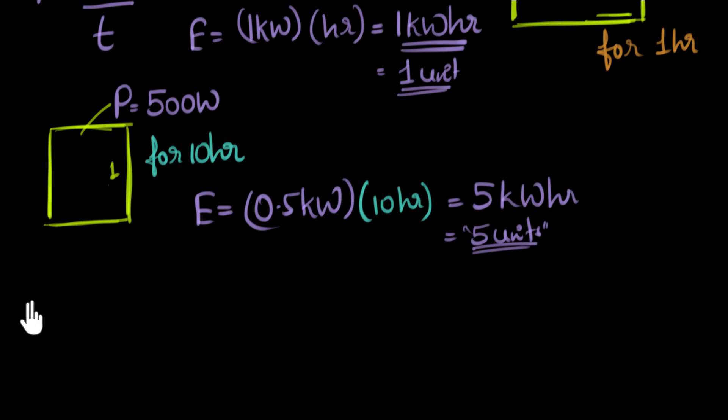So if we take one kilowatt hour, that's going to be one kilowatt is 1,000 watts. That's 1,000 watts times time is one hour. Let's put one hour in terms of seconds, because second is a standard unit. That's going to be 3,600 seconds.